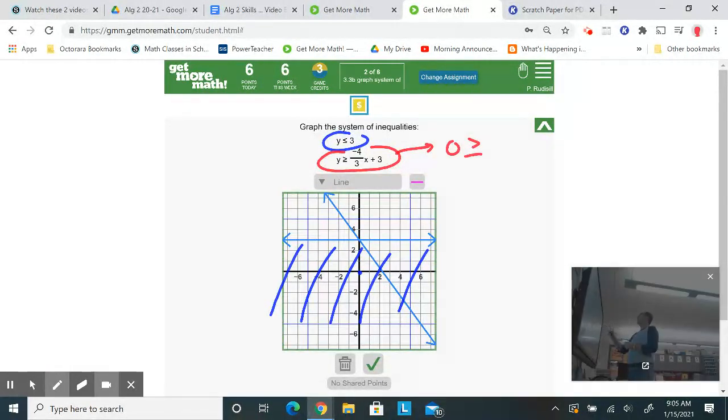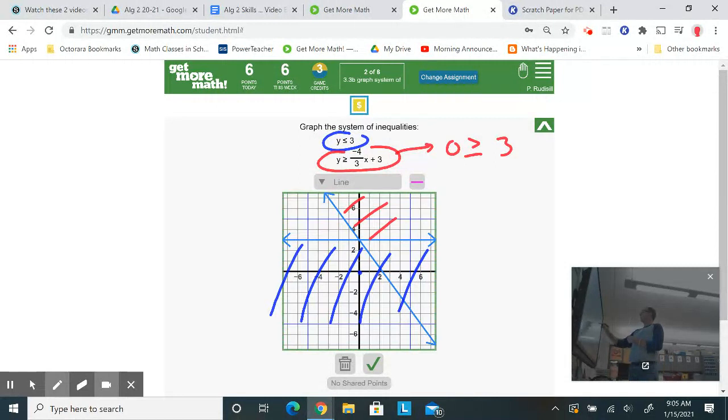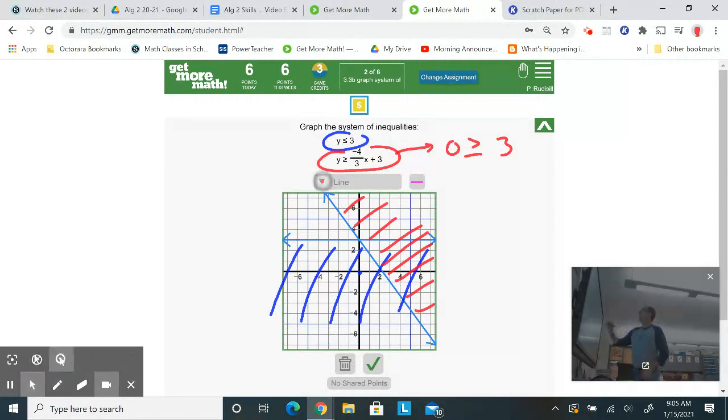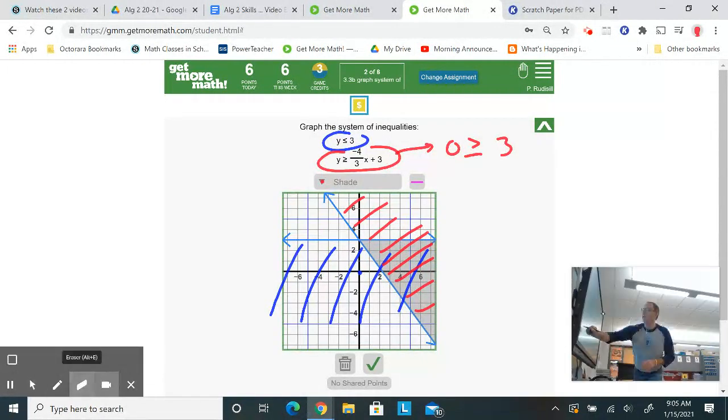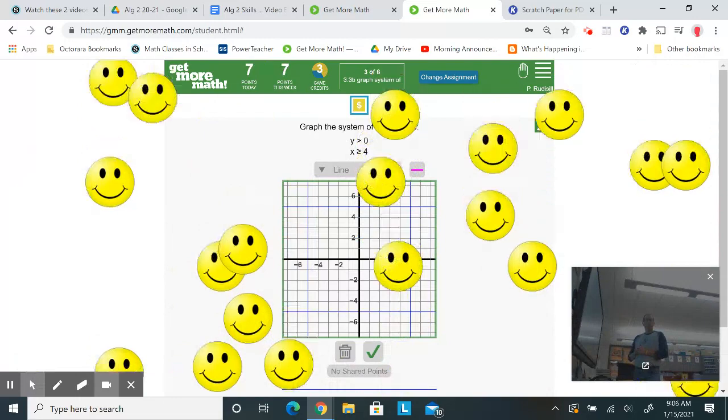So 0 greater than or equal to, now negative 4 thirds, 4 thirds times 0 is 0, 0 plus 3 is 3, is 0 greater than 3. No. So 0, 0 does not work for that one. So I'm going to shade everything going this way. And I'm looking for the space that is shaded with both the blues and the reds. So I tap on the shade tool. And I'm going to shade right in there. I'm going to shade right in there where it overlaps. So let me erase my pen tool. And let's see now if this is true. Nice. Good luck with that.